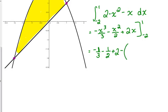Plug in negative 2. Now, negative 2 cubed is negative 8, but there was a negative in front of it, so that's positive 8 thirds. Negative 2 squared is positive 4, and it's minus, and 4 over 2 is 2. And then, 2 times negative 2 is negative 4.